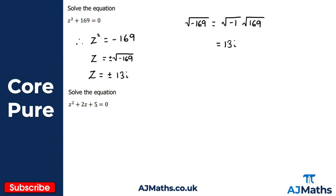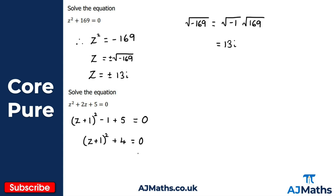For the final practice problem, we solve z² + 2z + 5 = 0. We can't factorize it, so again I'll complete the square — the quadratic formula is equally fine. Completing the square gives (z + 1)² — taking half the coefficient of z — subtract 1 squared, so minus 1, and add on the remaining constant, plus 5, all equal to zero. Simplifying: (z + 1)² − 1 + 5 = 0, giving (z + 1)² + 4 = 0.